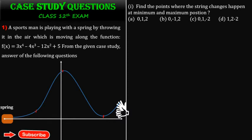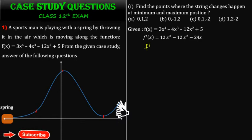Given f(x), we find f'(x) and set it equal to 0. So f'(x) = 12x³ - 12x² - 24x = 0. Taking 12x as common, we get 12x(x² - x - 2) = 0.